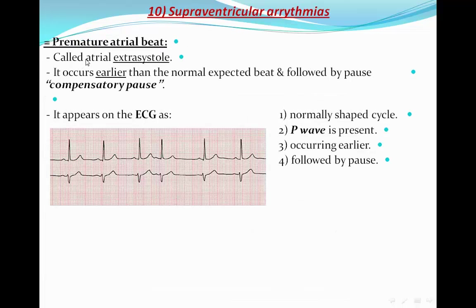Premature atrial beat, also called atrial extrasystole, occurs earlier than the normal expected beat and is followed by a pause called a compensatory pause. On the ECG, it appears as a normally shaped cycle with a P wave, occurring earlier than expected and followed by a compensatory pause. It is an identical cycle but occurs earlier and is followed by a pause — exactly as if you moved a normal beat a little backward, making it closer to the previous beat and farther from the following beat.